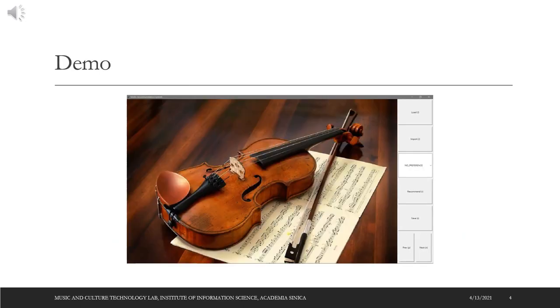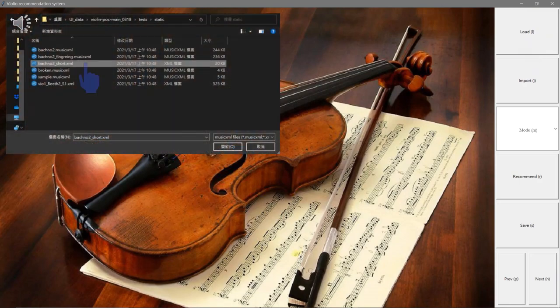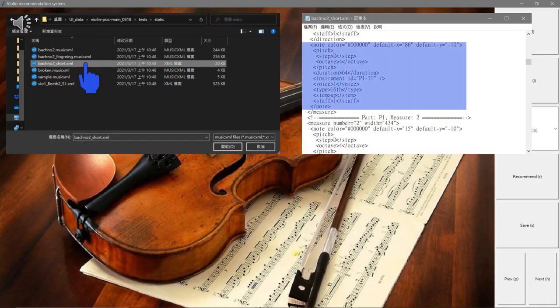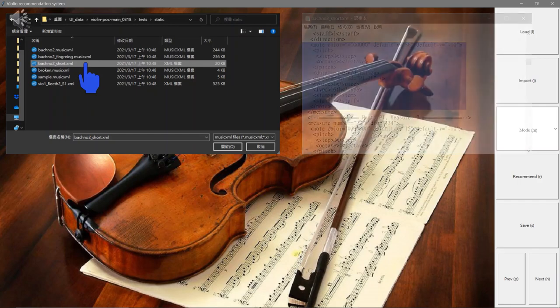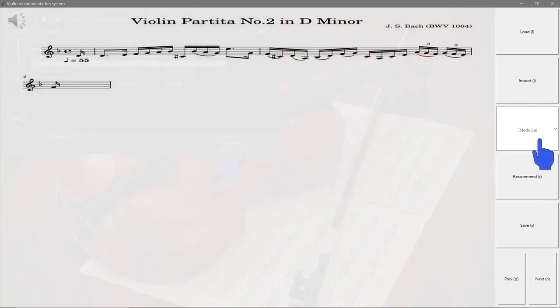Here we have a demo video for our proof-of-concept user interface. First, we can load a music score which is formatted in a standard music.xml file. The music.xml file contains note attributes including pitch, duration, note type and others, and our load function can automatically gather these note attributes. Press the button to open the file. Here, we choose the basic mode.